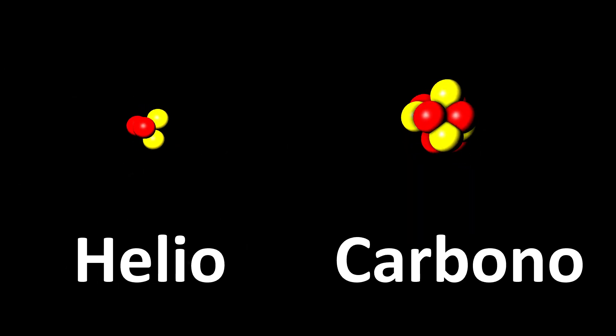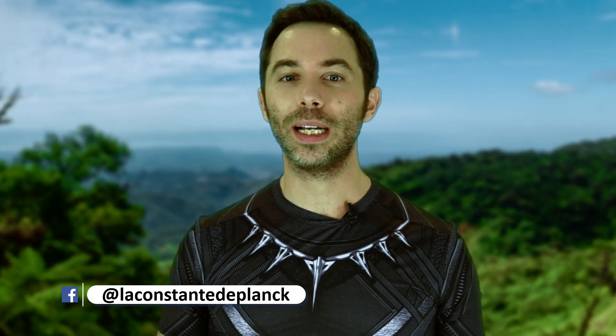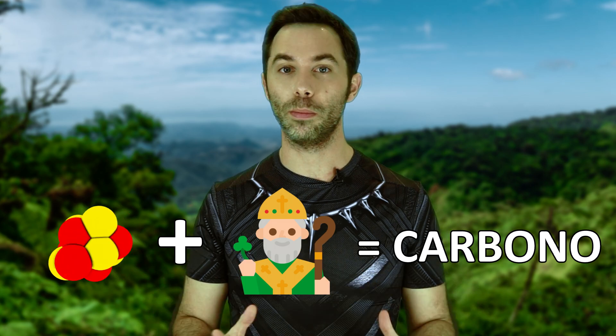Lo importante es que entendáis que un protón de un átomo de helio es igual que un protón de un átomo de carbono. Lo que pasa es que a esa configuración de un átomo que tiene dos protones la llamamos helio, y si tiene seis protones le llamamos carbono. Pero solo es un nombre; realmente los átomos no son tan distintos. Los átomos de diferentes elementos no son de distinto color o de distinta forma, simplemente es un conjunto de protones, neutrones y electrones bautizado con un nombre.